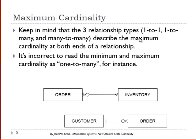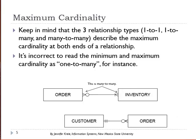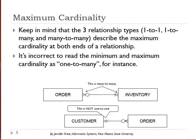It's incorrect to read the minimum and maximum together as a one-to-many. You're looking at maximum cardinality, so you're looking at both ends of the line, and that gives you your maximum cardinality. For example, this would not be a one-to-one; this would be a one-to-many.